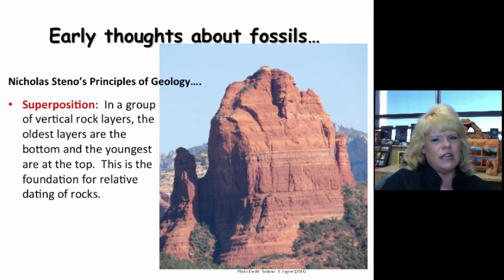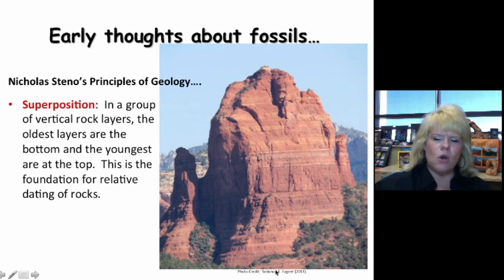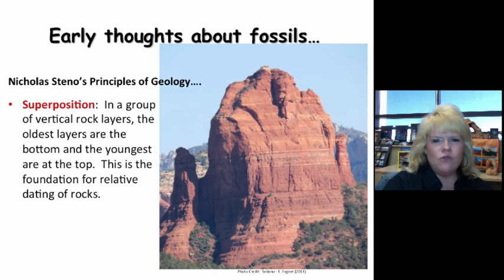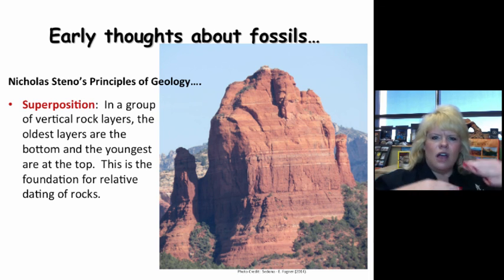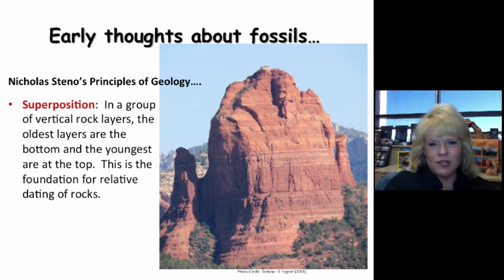The three laws Steno came up with: the most important is the Law of Superposition. This principle states that in a group of vertical rock layers — like you're seeing here in Sedona — the bottom layer should be the oldest and the top layer the youngest. As you recall from physical, there's always an exception, but it doesn't happen during deposition. It happens after rock layers are made, deposited, and lithified — sometimes a thrust fault can shove older rock layers on top of younger ones.